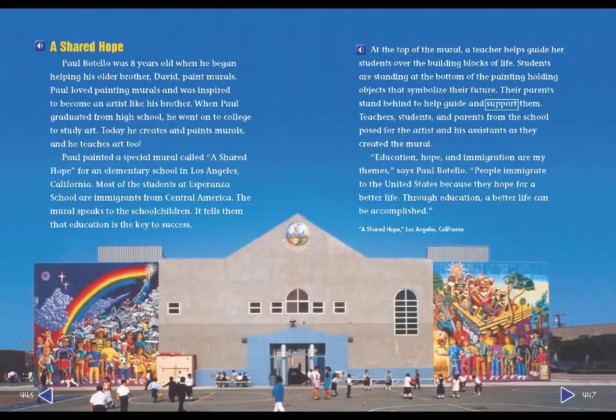A Shared Hope. Paul Botello was eight years old when he began helping his older brother David paint murals. Paul loved painting murals and was inspired to become an artist like his brother. When Paul graduated from high school, he went on to college to study art. Today, he creates and paints murals, and he teaches art, too. Paul painted a special mural called A Shared Hope for an elementary school in Los Angeles, California. Most of the students at Esperanza School are immigrants from Central America.